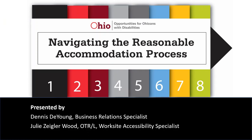Thank you all for joining us for our presentation on Navigating the Reasonable Accommodation Process. My name is Dennis DeYoung and I am a Business Relations Specialist here at Opportunities for Ohioans with Disabilities. My primary role is assisting students and adults with disabilities in finding permanent employment with the state of Ohio through our apprenticeship program, as well as advocating for the job seekers we serve with state agencies.